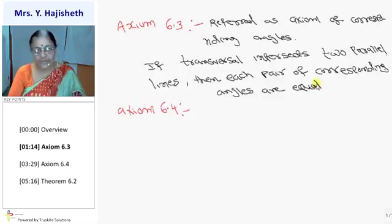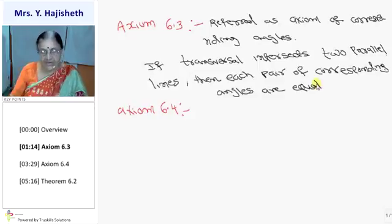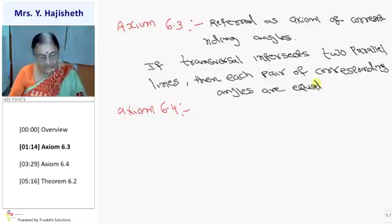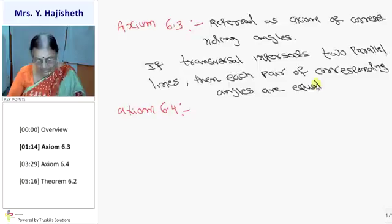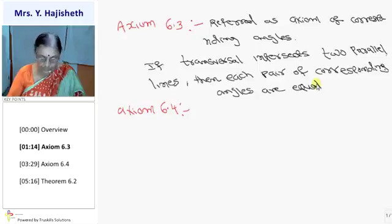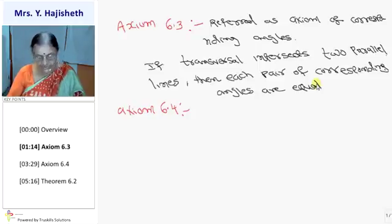From the last lecture, the corresponding angle pairs are: angles 1 and 5, angles 2 and 6, angles 4 and 8, and angles 3 and 7. So angle 1 equals angle 5, angle 4 equals angle 8, angle 2 equals angle 6, and angle 3 equals angle 7.